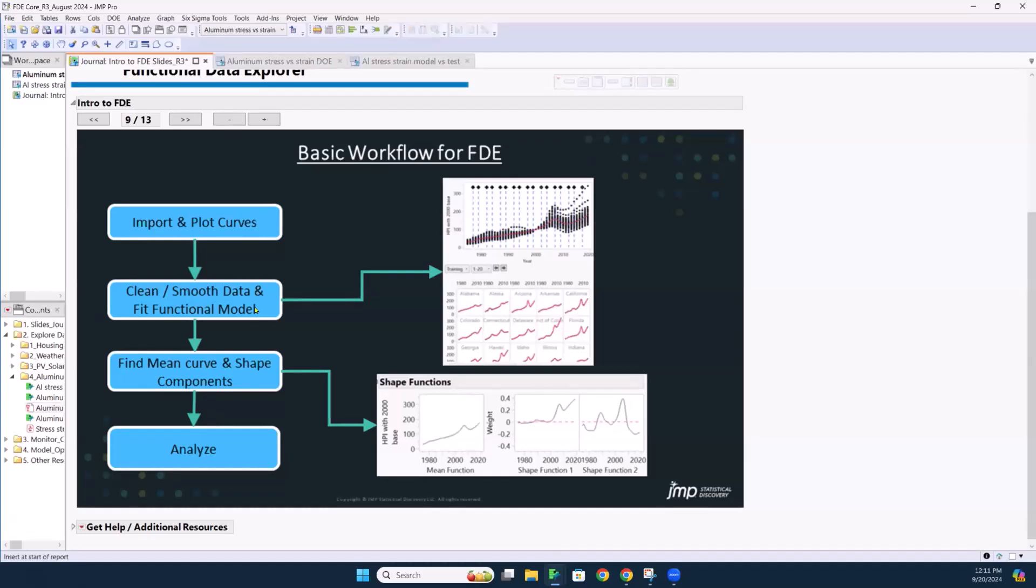And then we're going to fit a functional model, a spline. So really what we start with is individual points in your data, and then we're going to fit a continuous function. So that's what we mean by fit a functional model.